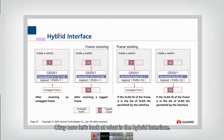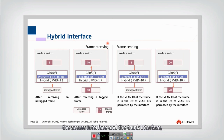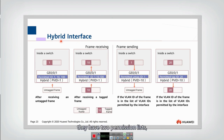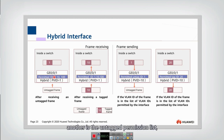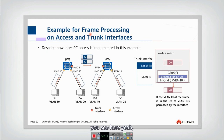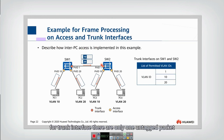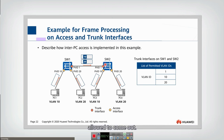Now let's look at what is the hybrid interface. The hybrid interface is a combination of these two kinds of interfaces — the access interface and the trunk interface. The key difference is that the hybrid interface has two permission lists. One is the tagged permission list, another is the untagged permission list. For the trunk interface, there is only one untagged packet allowed to come out.